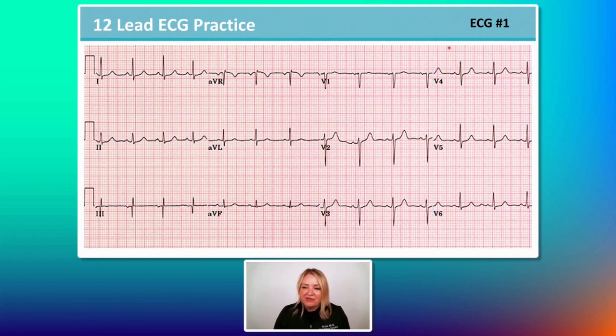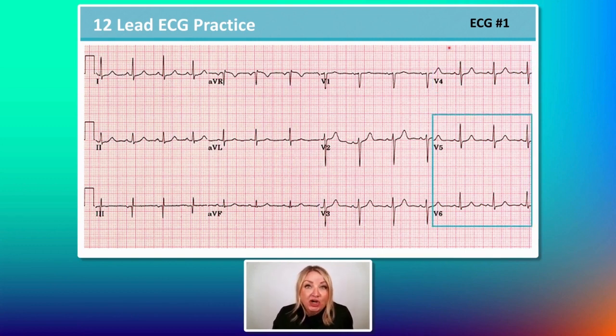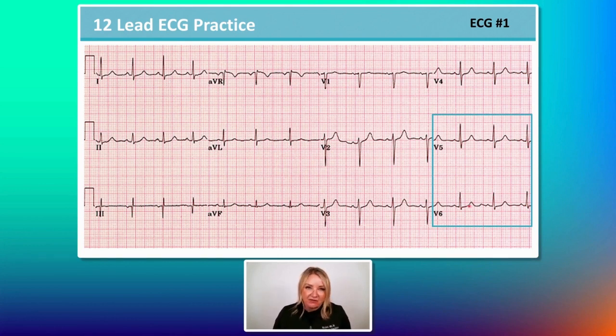Now we're going to go to leads V5 and V6, which look at the low lateral wall. Are you excited? — meaning, do you see any ST elevations? I don't in either of those leads.